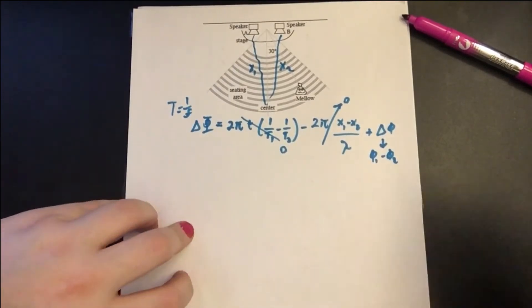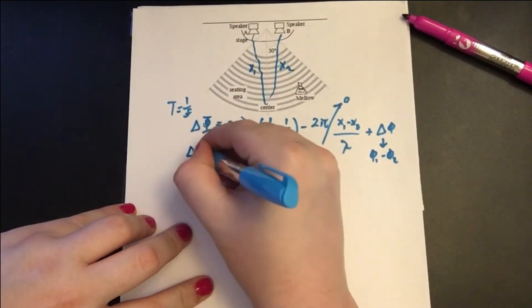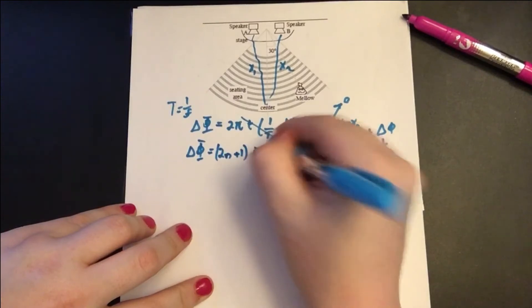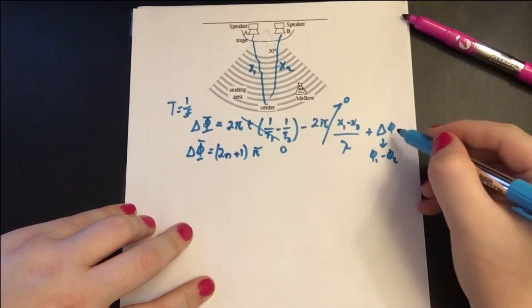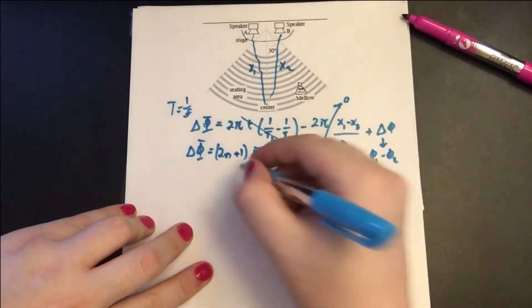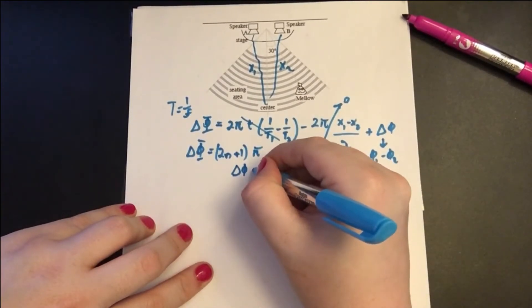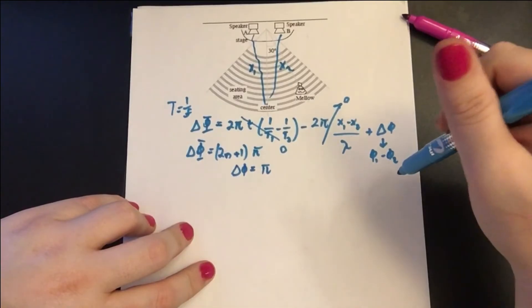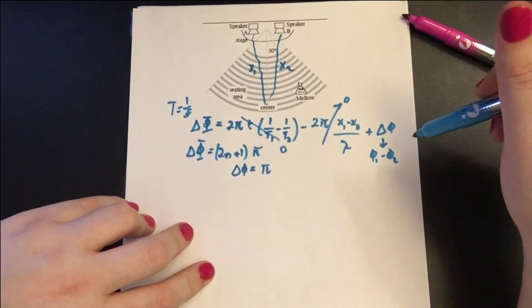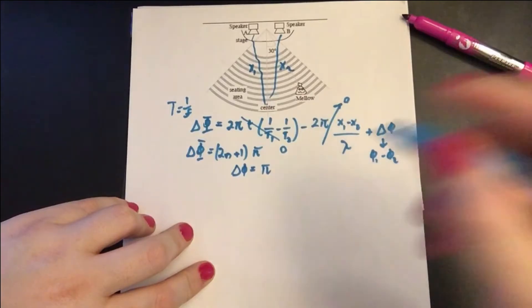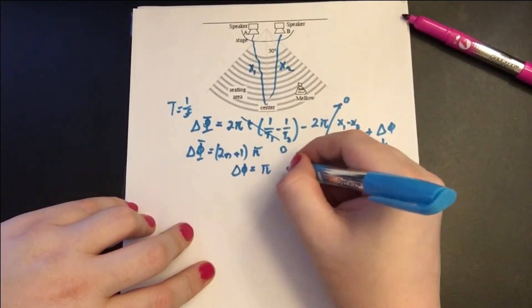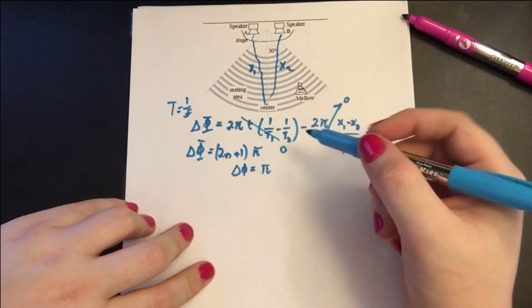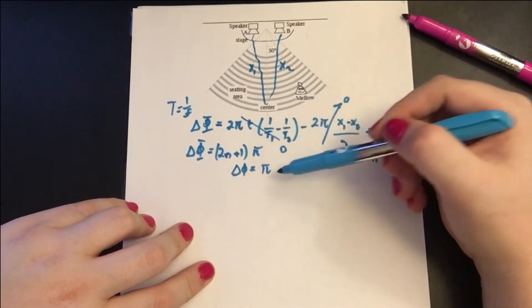For this to be no sound, for us to have destructive interference, recall that Δφ has to be (2n+1) times π. So our Δφ, small phi, the phase difference equals π or (2n+1)π. So this Δφ has to equal π, which tells us that if these two are exactly out of phase by π or by (2n+1)π, that means they're wired opposite because one is off by exactly one phase of π.